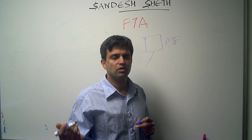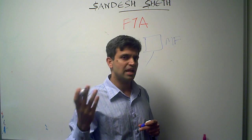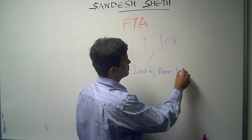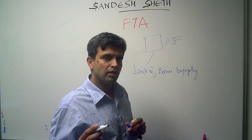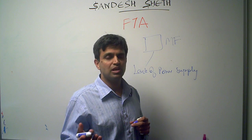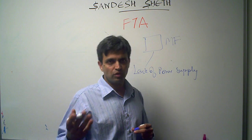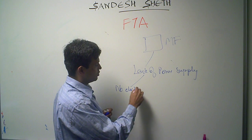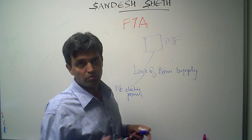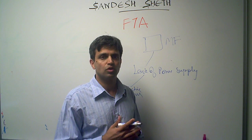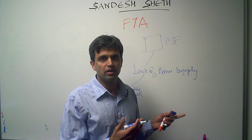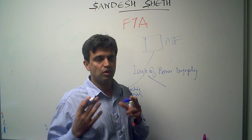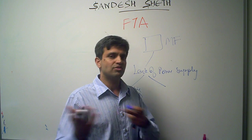Let's start with a sample. The first failure mode could be lack of power supply. The lack of power supply failure mode could be because of various causes. One cause would be no electric power supply to the building - it could be because the power line was cut, there is load shedding, or some other reason. Now if there is no power supply to the building, we have a generator, so the generator should have kicked in.